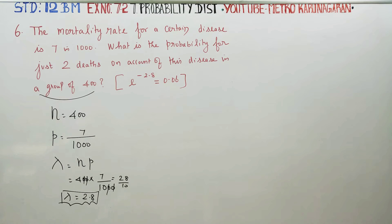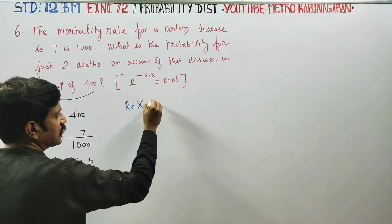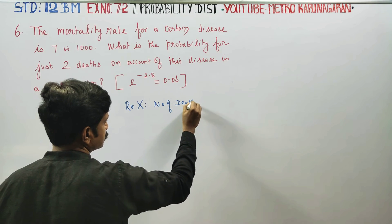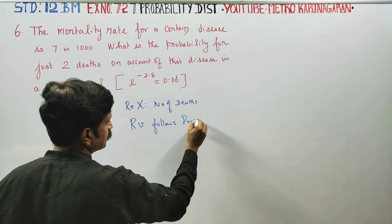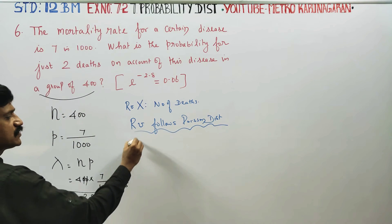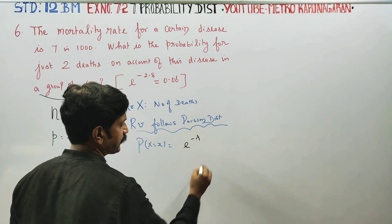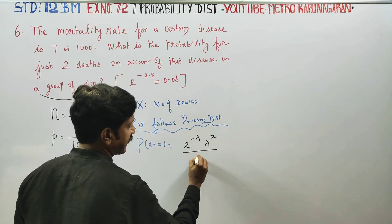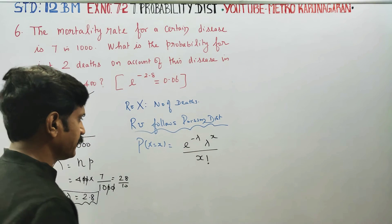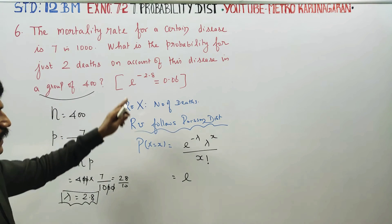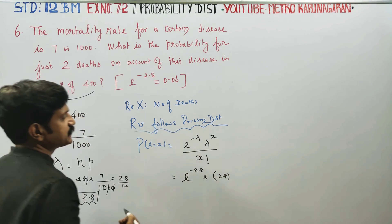Lambda is 2.8. The question asks for just two deaths. The random variable X is the number of deaths. X follows a Poisson distribution. The formula is P(X = x) = e^(−λ) × λ^x divided by x factorial. Here, e to the power of minus lambda, with lambda equal to 2.8.